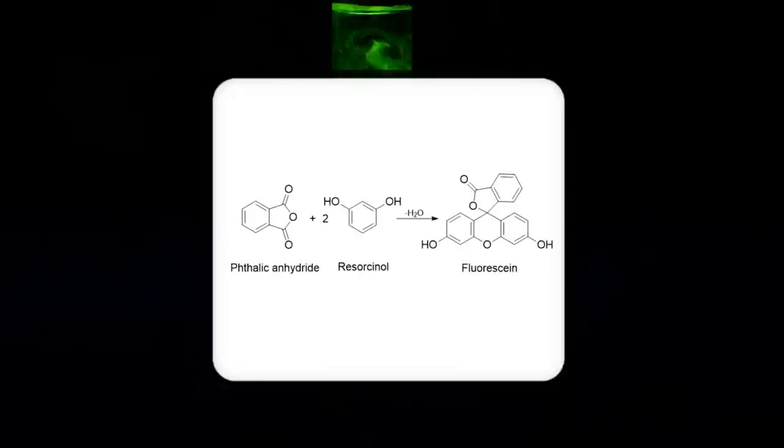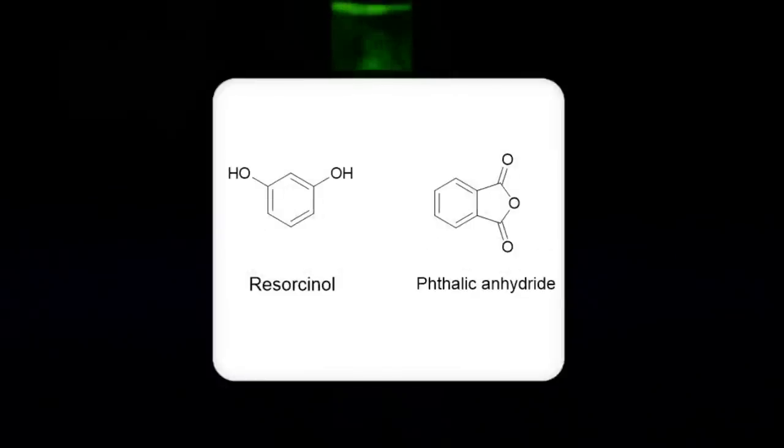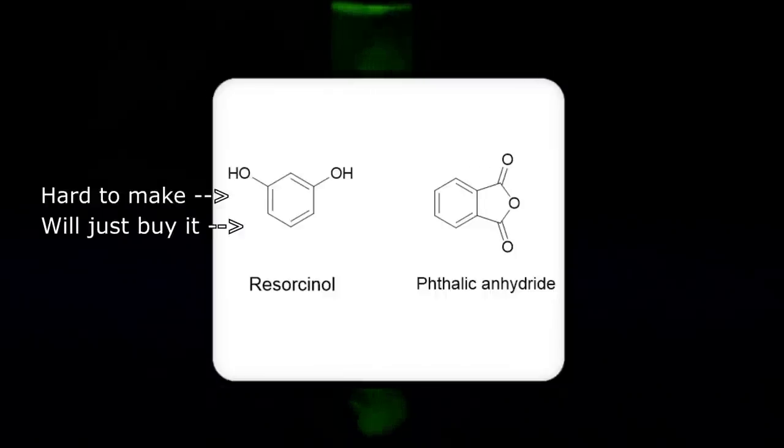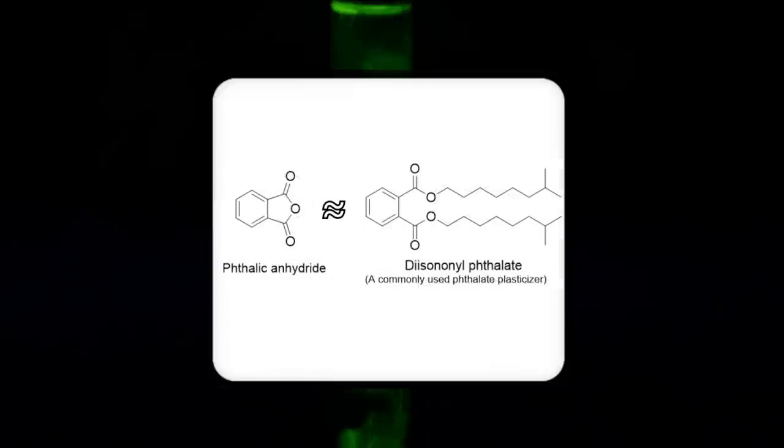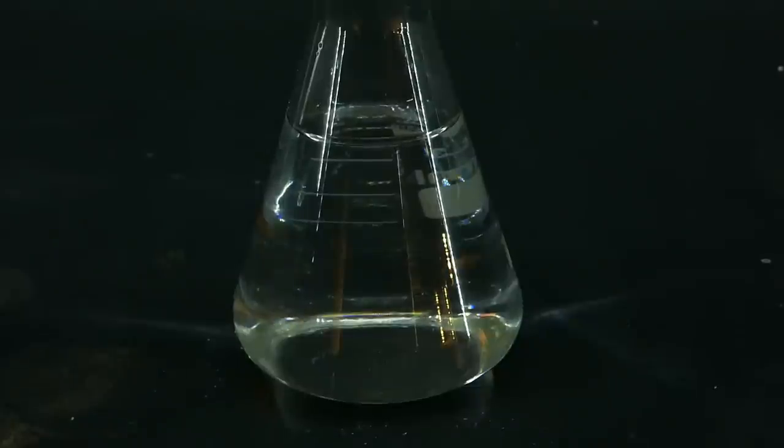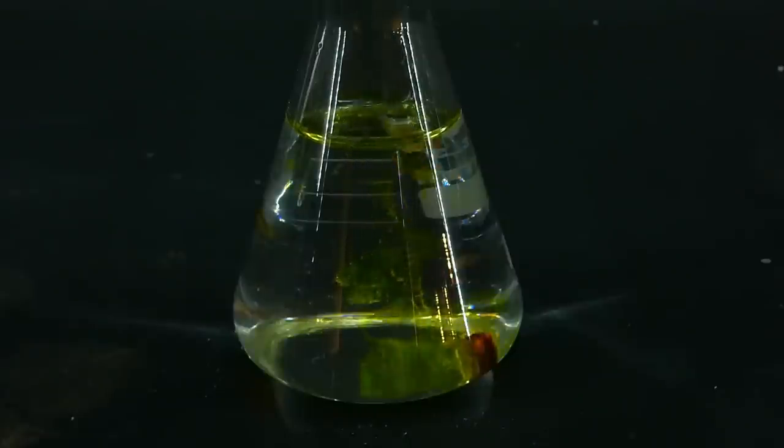Firstly, Fluorescein can be made by the reaction of resorcinol with something called phthalic anhydride. The first ingredient is pretty hard to make, so I will just buy it from a chemistry supplier, but the phthalic anhydride is chemically pretty similar to a group of commonly used plasticizers called phthalates. These plasticizers are used to make various kinds of plastics softer, because on their own they are pretty hard and brittle.